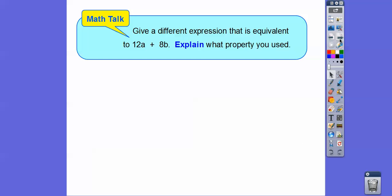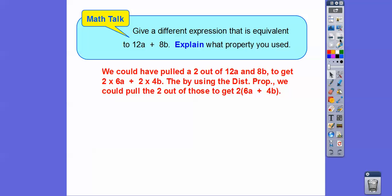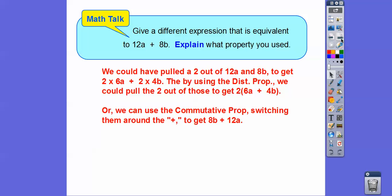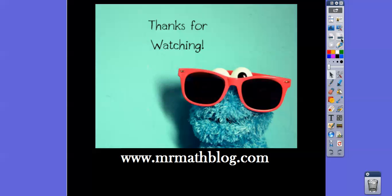Let's give a different expression equivalent to 12A plus 8B and explain what property we use. We could pull out a two instead — it wouldn't be the GCF, but it's a factor. Two goes into 12A six times, and two goes into 8B four times. So if we pull a two out, we get two times 6A plus two times 4B, and using the distributive property it becomes two times the quantity 6A plus 4B. We could also use the commutative property of addition and just switch them around — instead of 12A plus 8B, we could write 8B plus 12A. Hope that makes sense — take care!